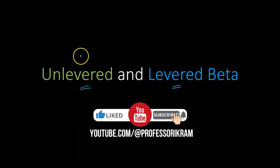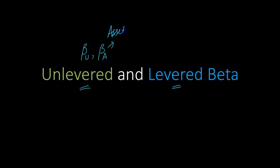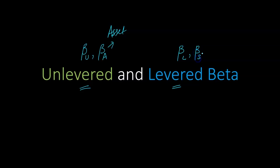Hi everyone. In this video I'm going to follow up on a previous video on the relationship between a firm's unlevered beta and its levered beta. The symbol for unlevered beta is either beta-u or more commonly beta-a, where beta-a stands for asset beta. Levered beta is sometimes written as beta-l or more commonly beta-s, where beta-s stands for equity — s for stock — so equity beta.